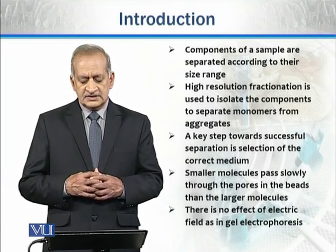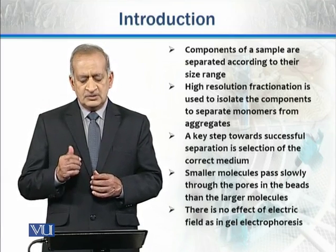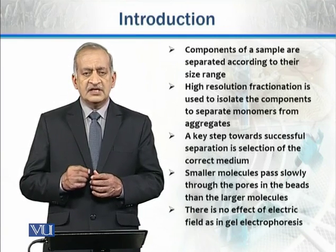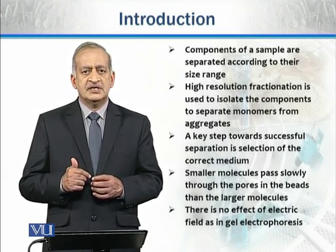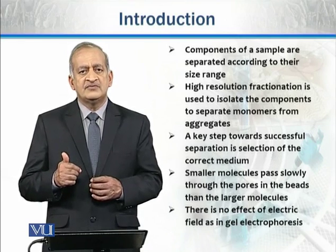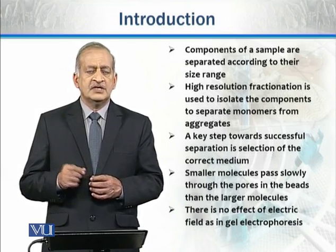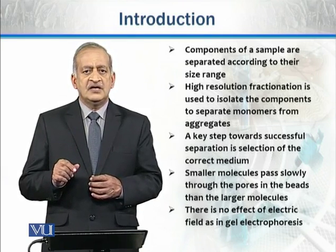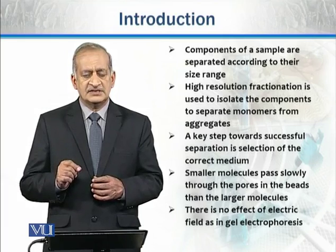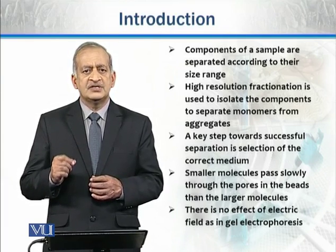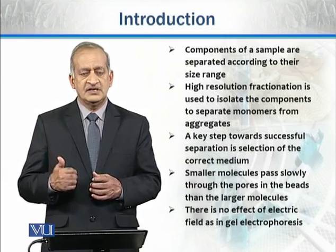Smaller molecules pass slowly through the pores in the beads compared to larger ones. The reason is that smaller molecules enter the pores present in the beads, and therefore they have to travel a longer distance, which means it will take longer time for their elution. Larger molecules, which cannot enter the pores of the beads, will pass through the inter-bead spaces, and that is why they pass rapidly and elute first from the column.